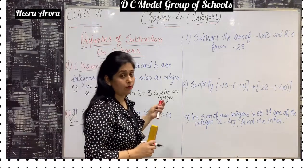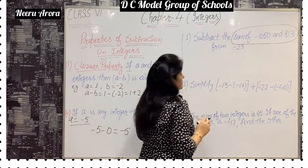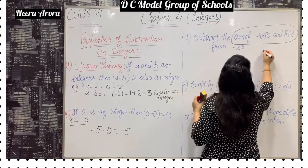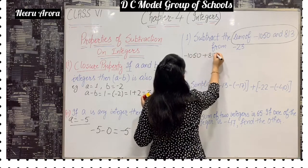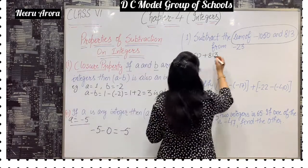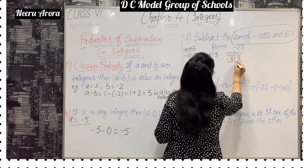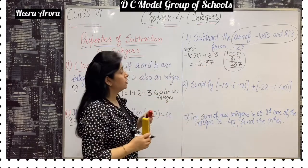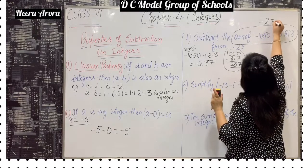Let's discuss sums from your textbook. Subtract the sum of minus 1050 and 830. In case 1, we will first find out the sum. We see there are opposite signs, so we subtract the terms. We get 237, and the sign of the bigger term comes, which is minus. So the sum of minus 1050 and 830 is minus 237.